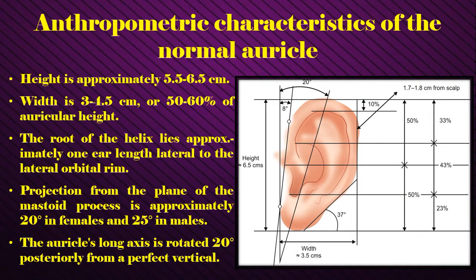Some important anthropometric characteristics of the normal ear to remember: height is approximately 5.5 to 6.5 centimeters; width is around 3 to 4.5 centimeters, or about 50 to 60% of auricular height. The root of the helix lies approximately one ear length lateral to the lateral orbital rim. Projection from the plane of the mastoid process is approximately 20 degrees in females and 25 degrees in males. The auricle's long axis is rotated 20 degrees posteriorly from a perfect vertical.